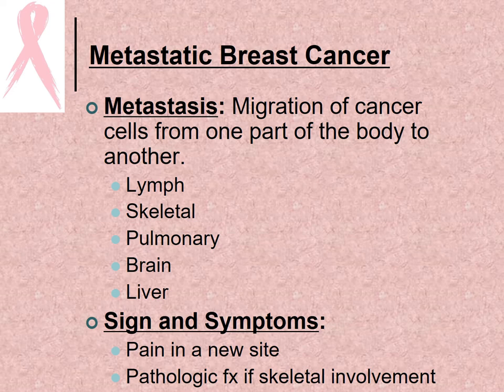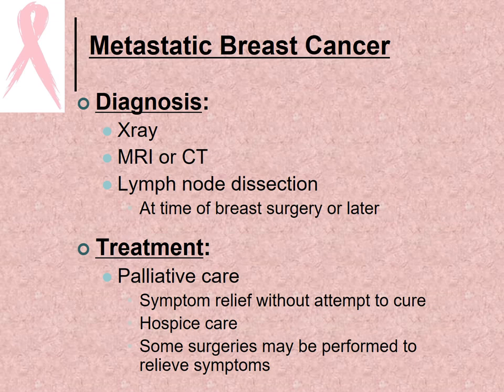Metastasis is the migration of cancer cells from one part of the body to another. It can metastasize to the lymph nodes, skeletal structure, pulmonary system, brain, and liver — presenting as pain at the metastatic site or a pathological fracture if the skeleton is involved. It is diagnosed by x-ray, MRI, or CT, and a lymph node dissection may be done at the time of breast surgery or later. Treatment is palliative care — symptom relief without an attempt to cure — along with hospice care and sometimes surgery to relieve symptoms.